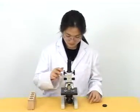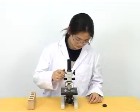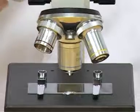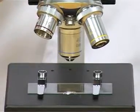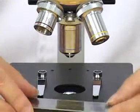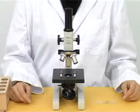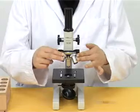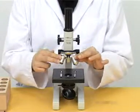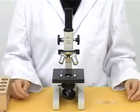After use, raise the body tube and remove the slide from the stage. Remember not to remove the slide when the objective is close to the slide. Finally, rotate the low-power objective until it is in line with the body tube.